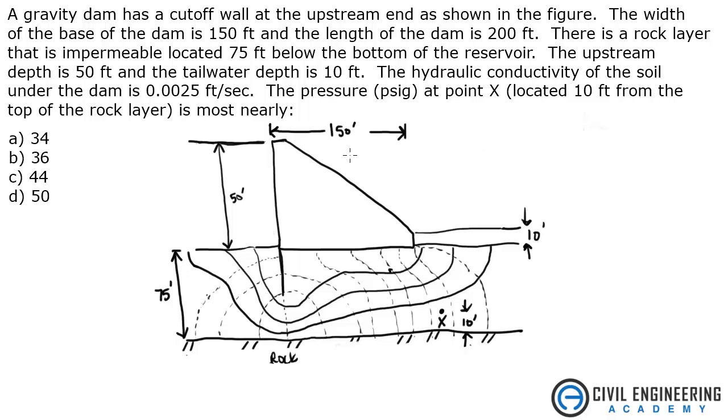There's a rock layer that is impermeable located 75 feet below the bottom of the reservoir. The upstream depth is 50 feet, and the tailwater depth is 10 feet. The hydraulic conductivity of the soil under the dam is 0.0025 feet per second. The pressure in PSIG, pounds per square inch gauge at point X, located 10 feet from the top of the rock layer is most nearly what?